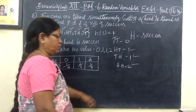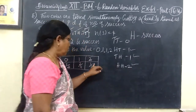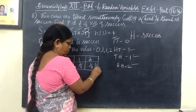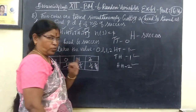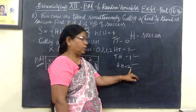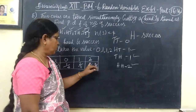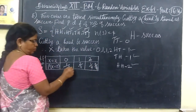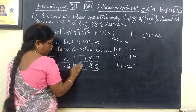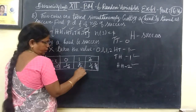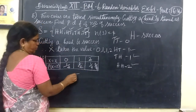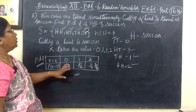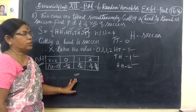Two is one time, one chance is one by four, which equals one by two. So this is the probability distribution function. That is all.